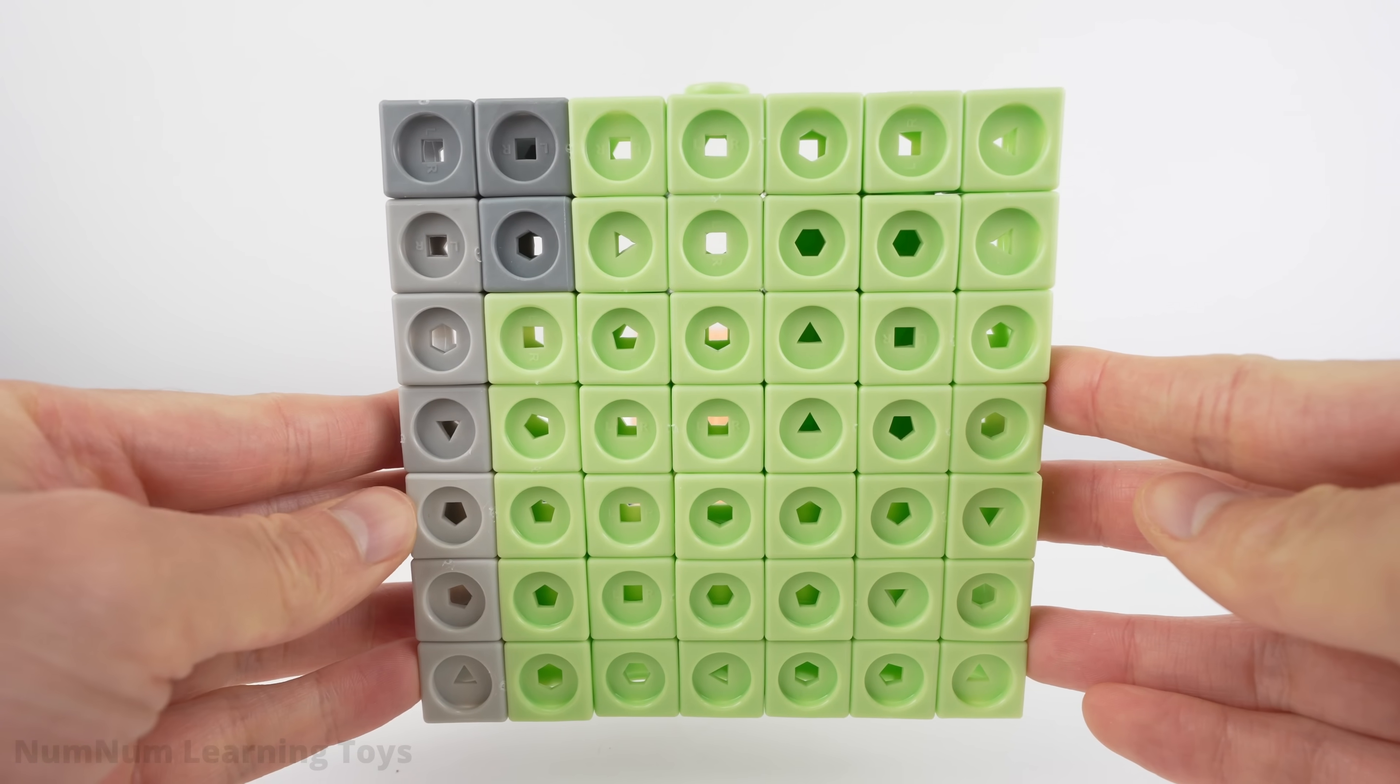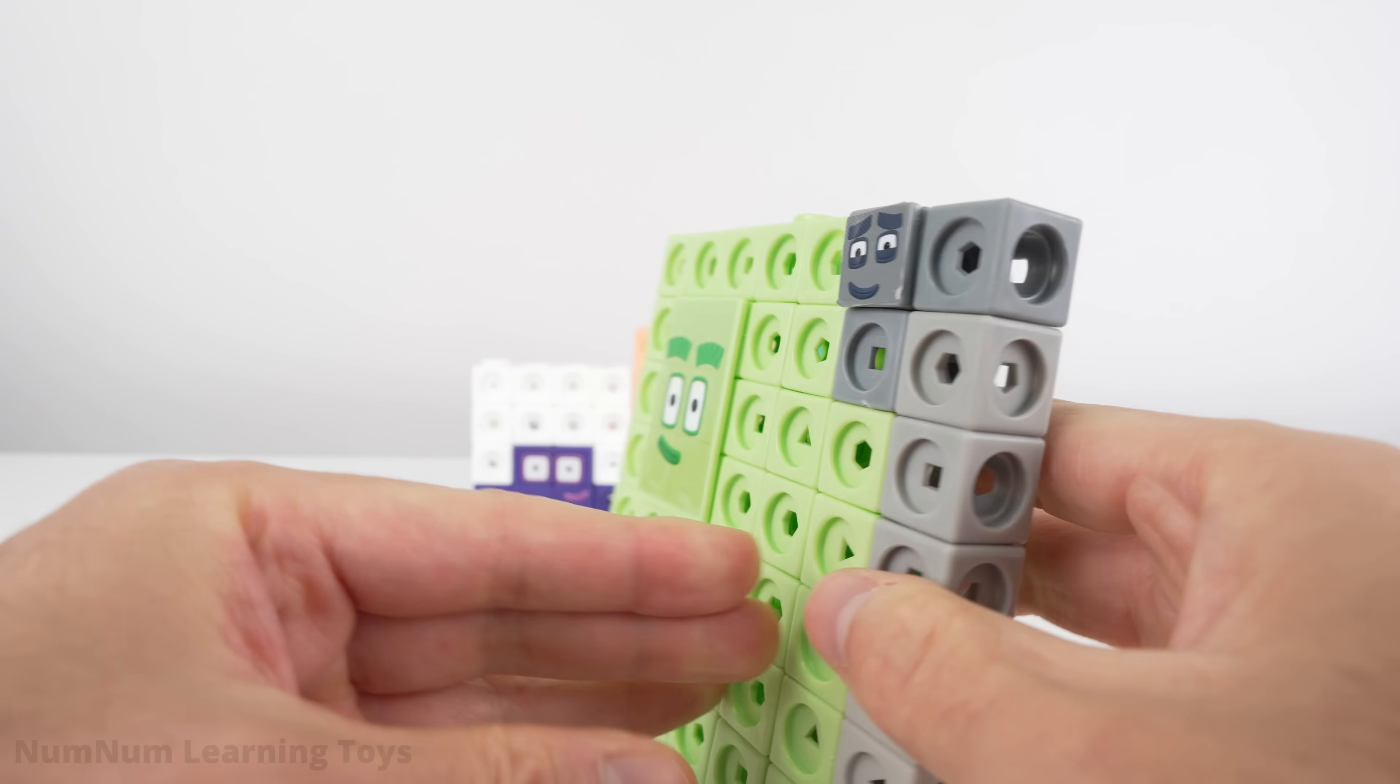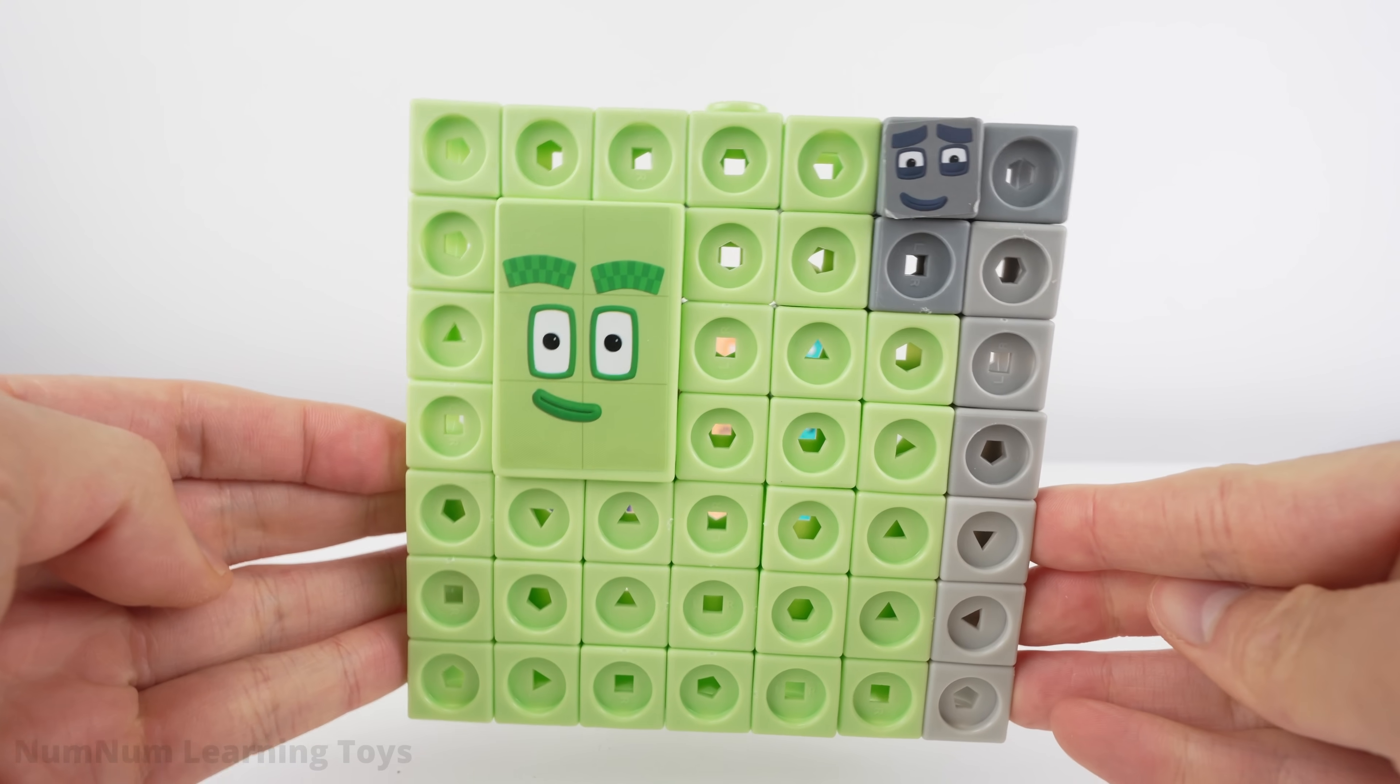This square is made of forty green blocks and nine gray blocks. Forty-nine is also forty plus nine.